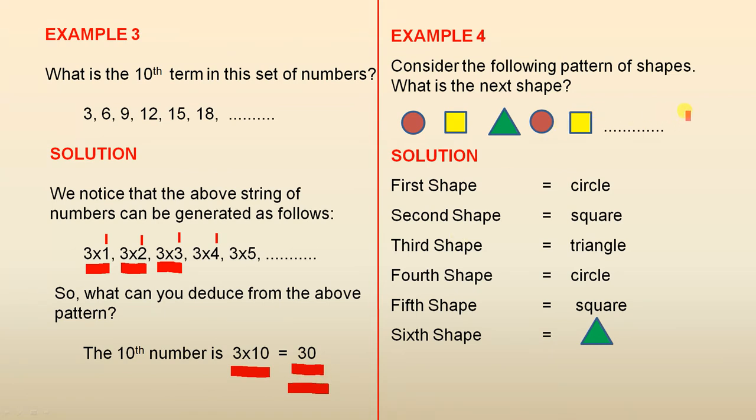Example 4: Consider the following pattern of shapes. What is the next shape? Circle, square, triangle, circle, square. So, first shape is circle, square, triangle, circle, square, and it makes sense that it is the triangle. Of course, it follows the pattern, doesn't it?